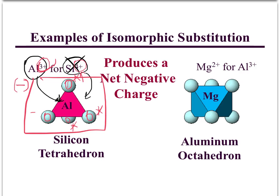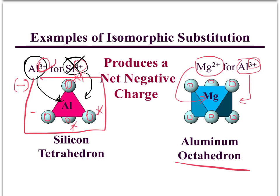It's not an insanely large negative charge, but it's negative nonetheless. The same thing can happen with our octahedrons: normally we have aluminum inside, but sometimes magnesium comes in instead of aluminum when these sheets are being formed in the soil. Aluminum has three positive charges and magnesium only has two, so again we have a net negative charge not being satisfied by whatever is in the middle.